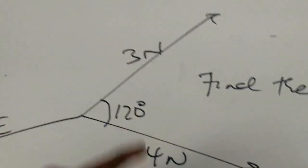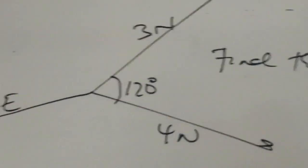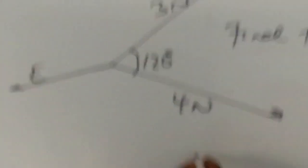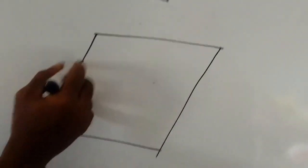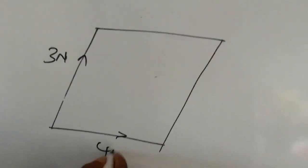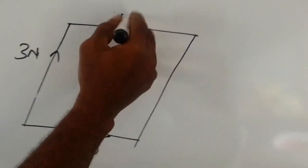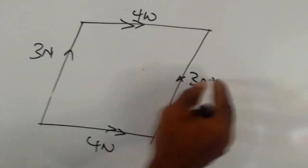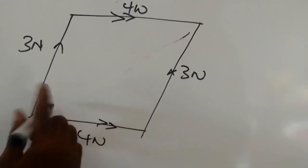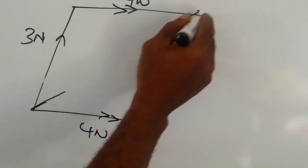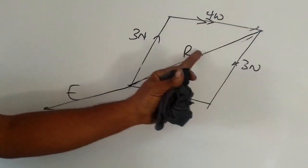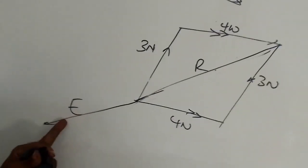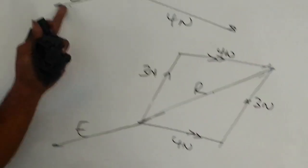The angle between 3N and 4N is more than 90 degrees. When the angle between two vectors is more than 90 degrees, we apply the parallelogram law of vectors. So here is 3N, here is 4N, here is also 4N, and here is 3N. We are going to look for the resultant. Why do we look for the resultant? Because the resultant is equivalent to the equilibrant, they act in opposite positions. So looking for the equilibrant of two forces is, in other words, looking for the resultant.